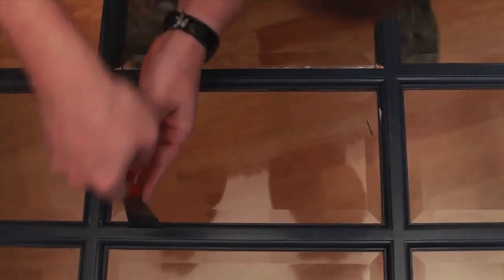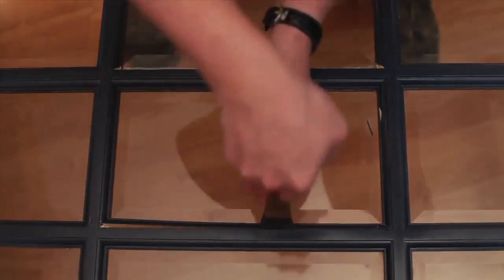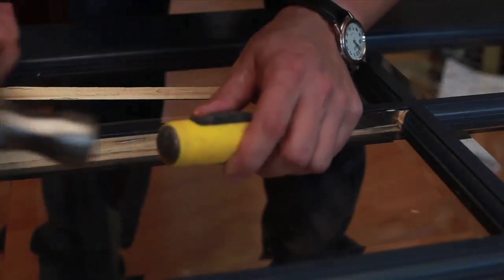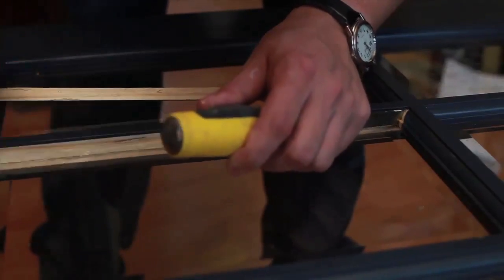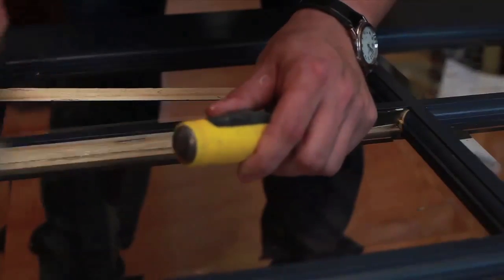When using a router, use a half inch bit. The bit guide should roll inside the edges, just removing the moldings. Ensure all corners are squared by using a sharp utility knife or wood chisel. Make sure to carefully follow the profile.